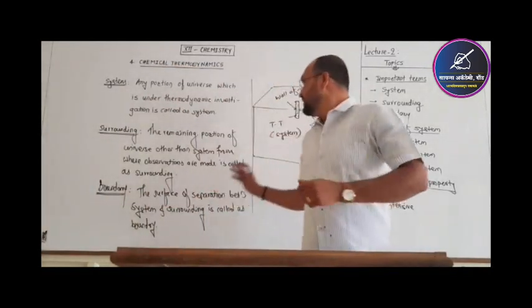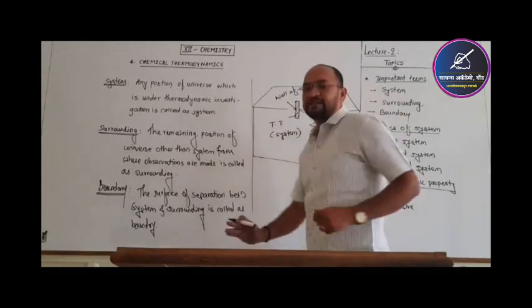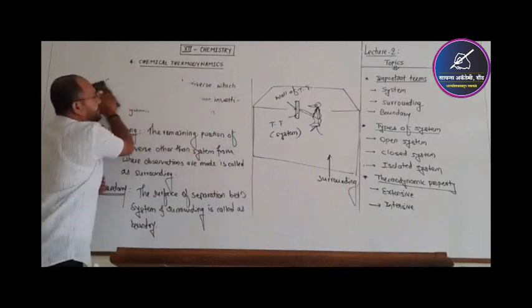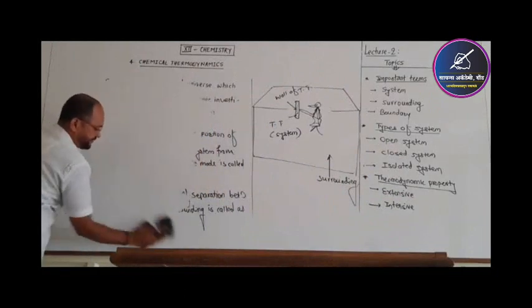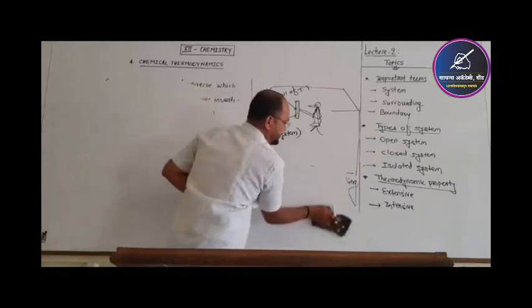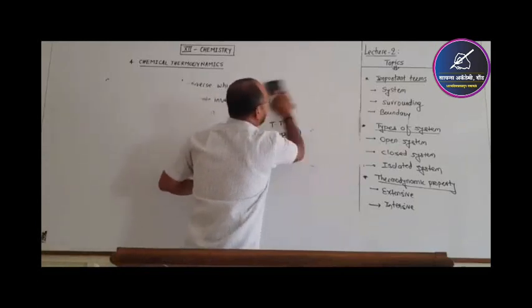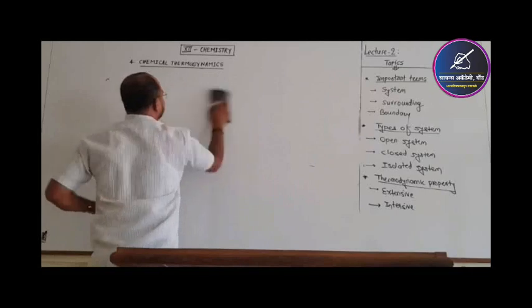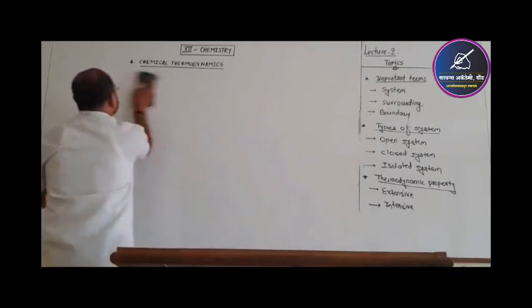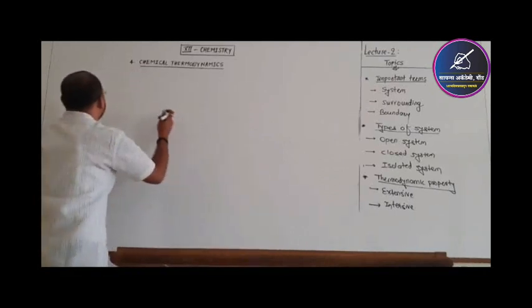Now we are going to discuss the different types of system. There are three types of system: open system, closed system, and isolated system. To understand these points thoroughly, first observe the diagram.